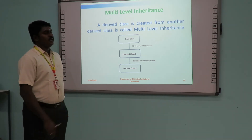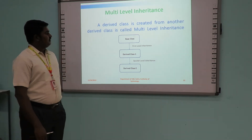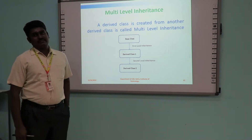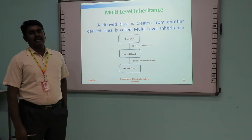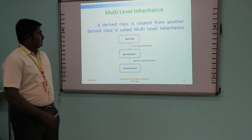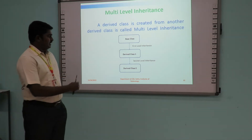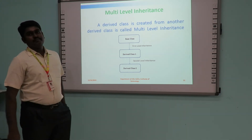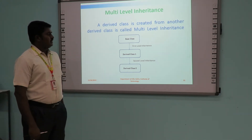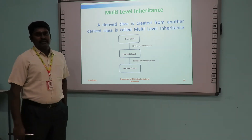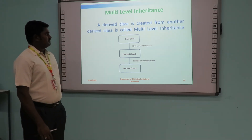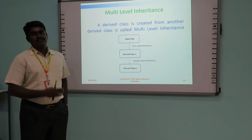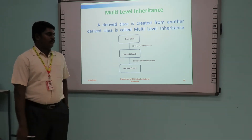Next one is multi-level inheritance. Here we derive a class with the help of another derived class. We have one base class and two derived classes. Derived class 2 is derived from derived class 1. After creating the object for derived class 2, the members of the base class, derived class 1, and derived class 2 will all be available.